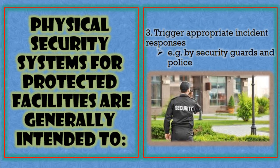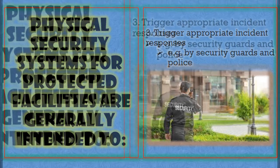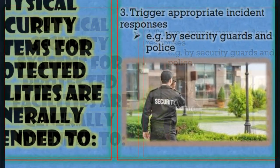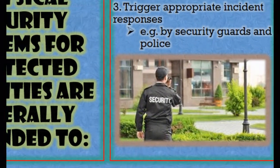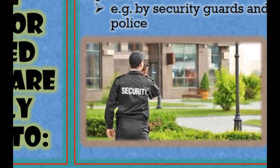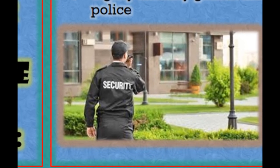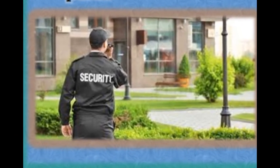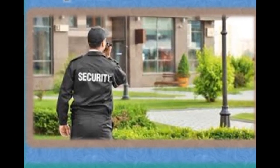Third, to trigger appropriate incident responses. Once the alarm is activated, there is at least a signal for our security guards — or if not them, the police — to respond. Those are the three major intentions or purposes of physical security systems.